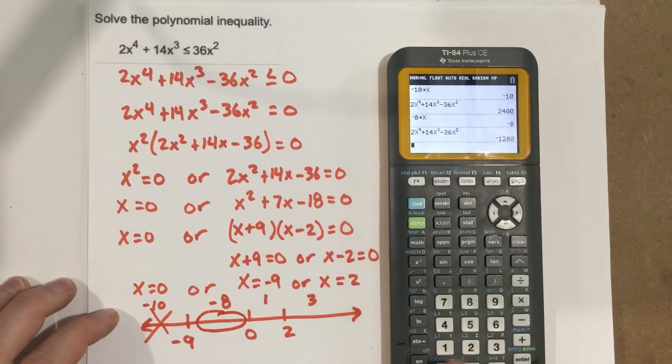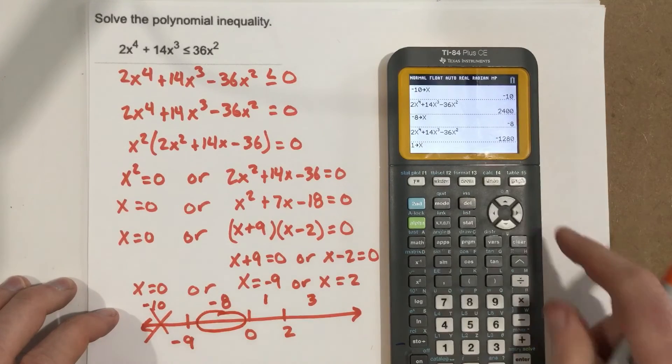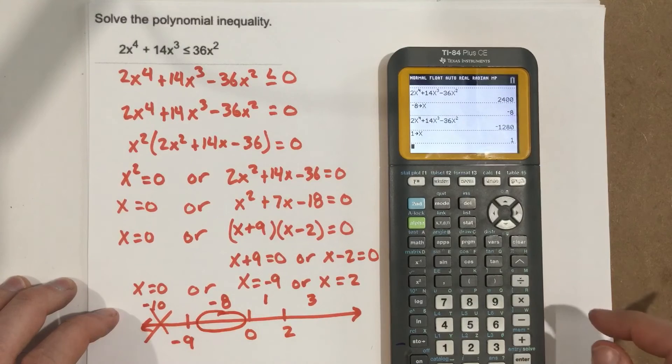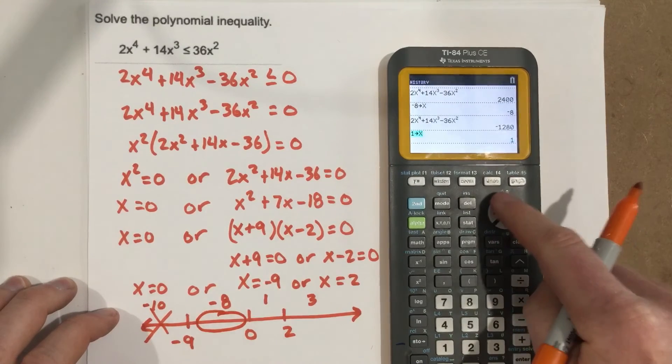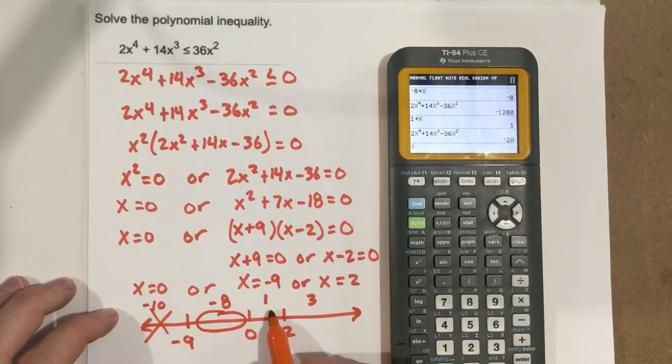I check 1. So 1 stored as x. And then grab that function again. Negative 20. So these solutions in here work as well.